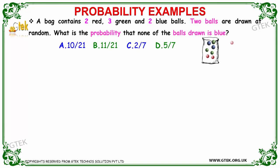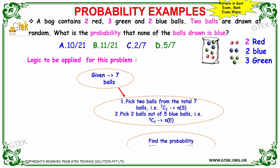Now let's see a typical example of balls in a bag. The condition is two balls are drawn at random. What is the probability that none of the balls drawn is blue? We have two red balls, two blue balls, and three green balls. What is the possibility that the ball drawn should not be blue?